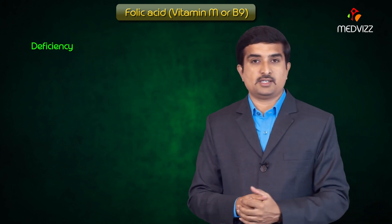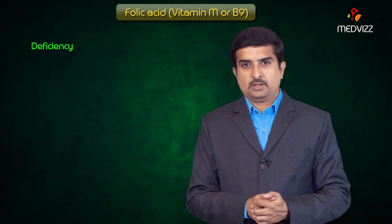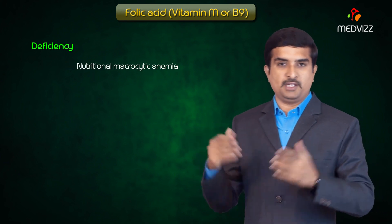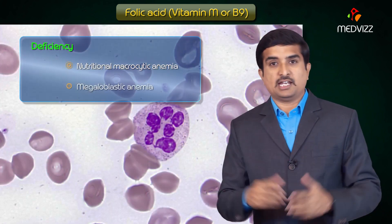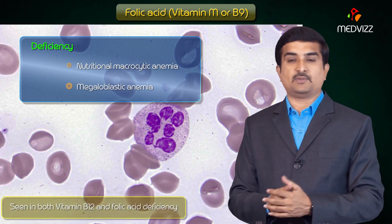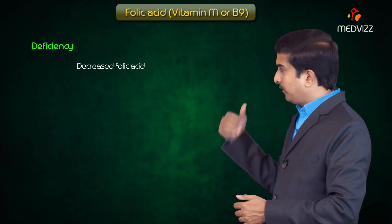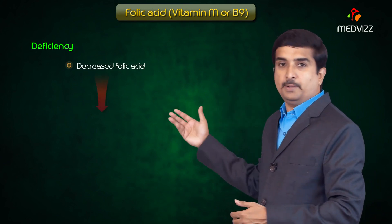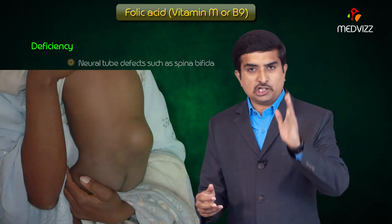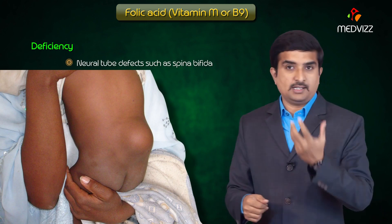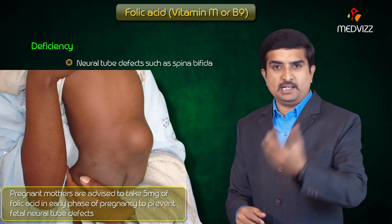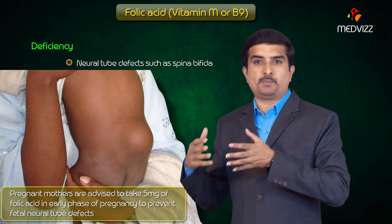Deficiency of folic acid can cause nutritional macrocytic anemia and megaloblastic anemia — the megaloblastic picture is seen in both vitamin B12 and folic acid deficiency. Due to decreased folic acid there is reduced DNA synthesis, homocystinemia, and neural tube defects such as spina bifida. This is why pregnant mothers are advised to take 5 milligrams of folic acid in the early phase of pregnancy, especially to prevent fetal neural tube defects.